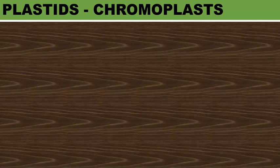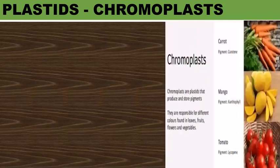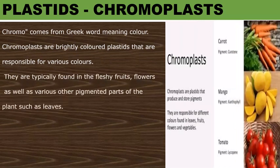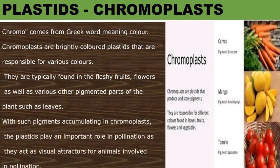There are different types of plastids with their specialized functions. Among them, a few are mainly classified based on the presence of pigments and their stages of development. A plastid called chromoplast — chroma comes from the Greek word meaning color. Chromoplasts are brightly colored plastids that are responsible for various colors. They are typically found in fleshy fruits, flowers, as well as various other pigmented parts of the plants such as sometimes in leaves. With such pigments accumulating in chromoplasts, they play an important role in pollination as they act as visual attractors for animals involved in pollination.